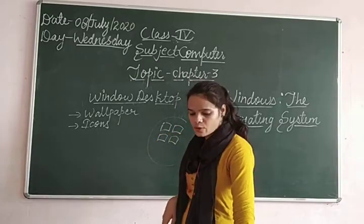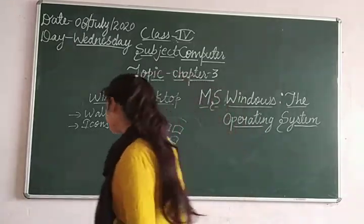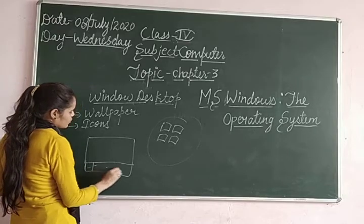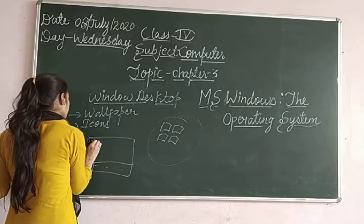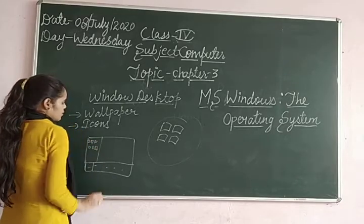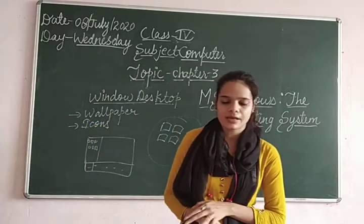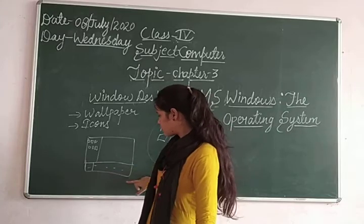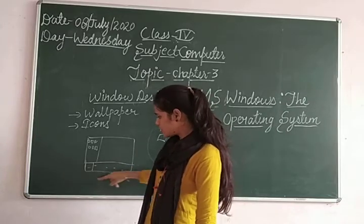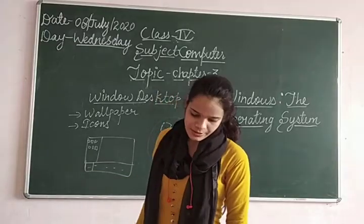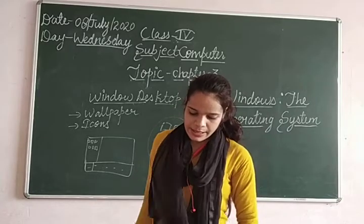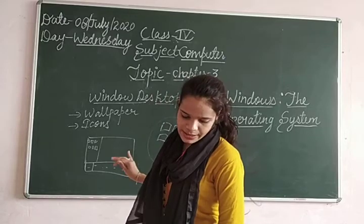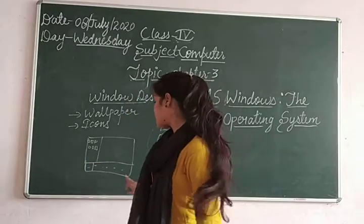Now, the taskbar. You will see the taskbar at the very bottom of your desktop. There is a Start button on the left side. The taskbar is a horizontal bar — horizontal means going across, vertical means going up and down. At the bottom of your desktop, there is the taskbar with the Start button, and on the right side you have speakers, clock, and other items.